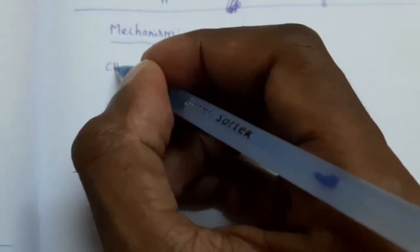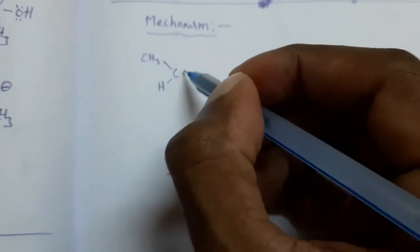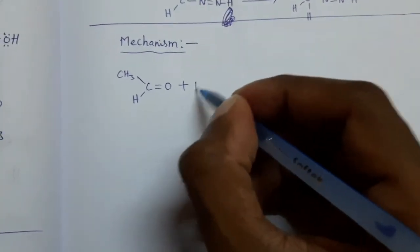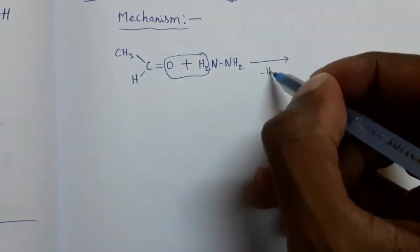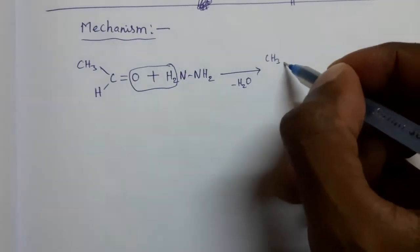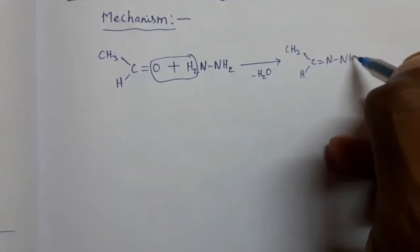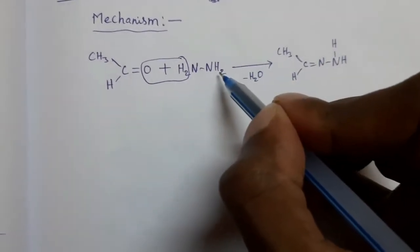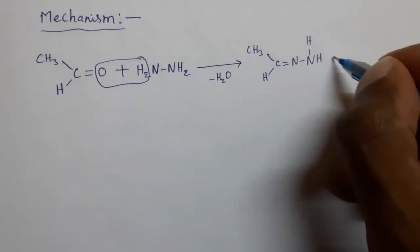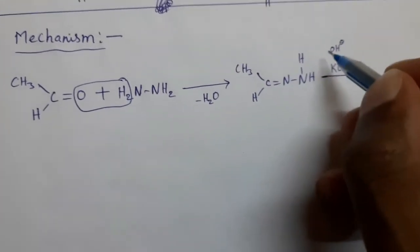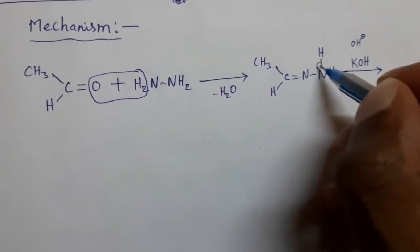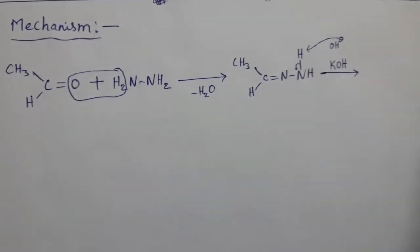Now see the mechanism of Wolf-Kishner reduction. Take an aldehyde as example: CH3CH=O plus H2N-NH2. From this, a water molecule is removed. Then we get CH3CH=N-NH2. This compound is treated with KOH, which is a strong base, so it provides OH⁻. The bonding electrons are shifted to nitrogen, and OH⁻ interacts with H⁺, which is removed in the form of water.